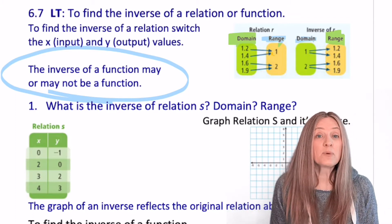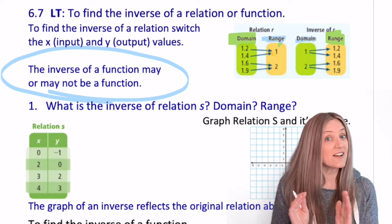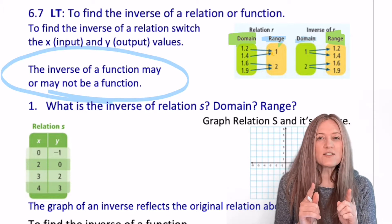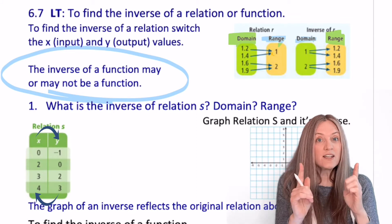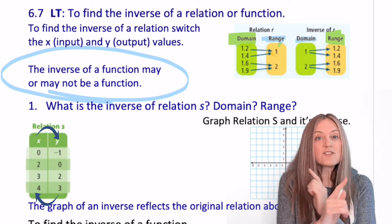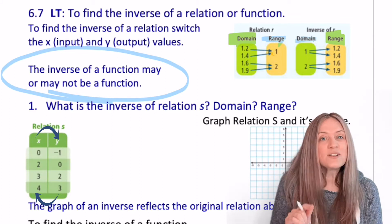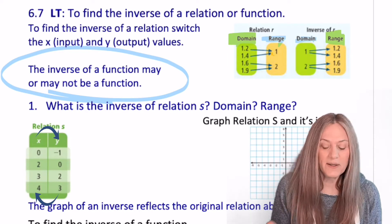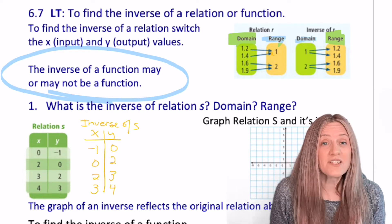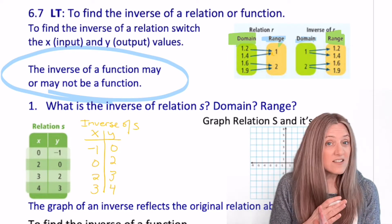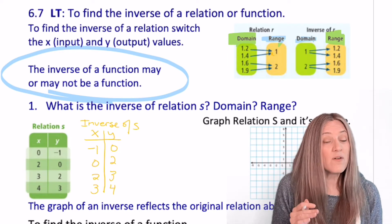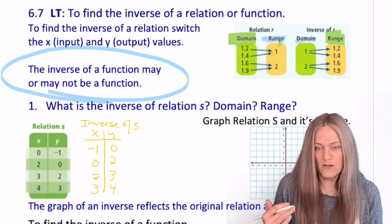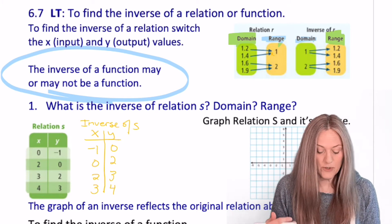The first thing I want to do is find the inverse of relation S. So I'm going to put down an XY chart, and then what are we going to do? We're going to switch the inputs and outputs, or the x's and the y's. So for the inverse of S, all we did was switch the x's and y's, so now for the inverse I have the x values of negative one, zero, two, three.